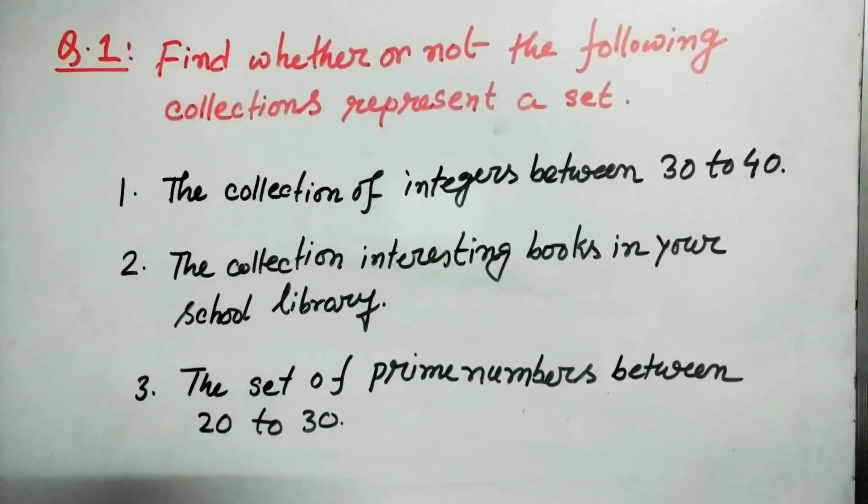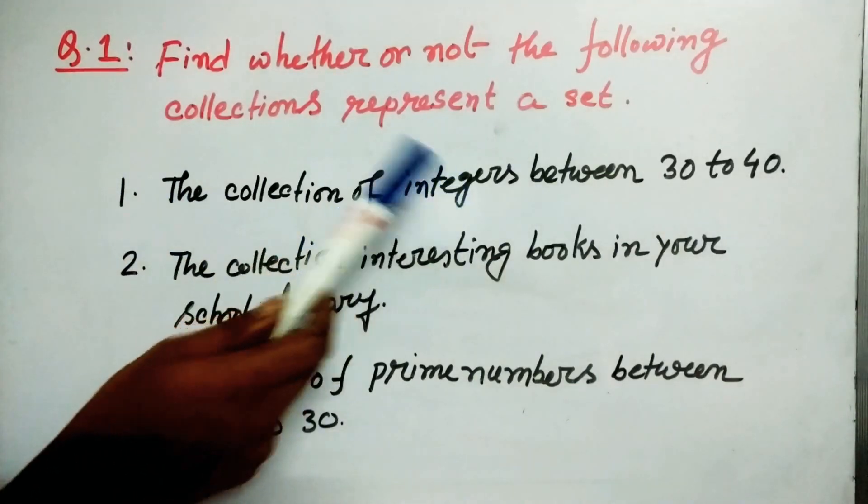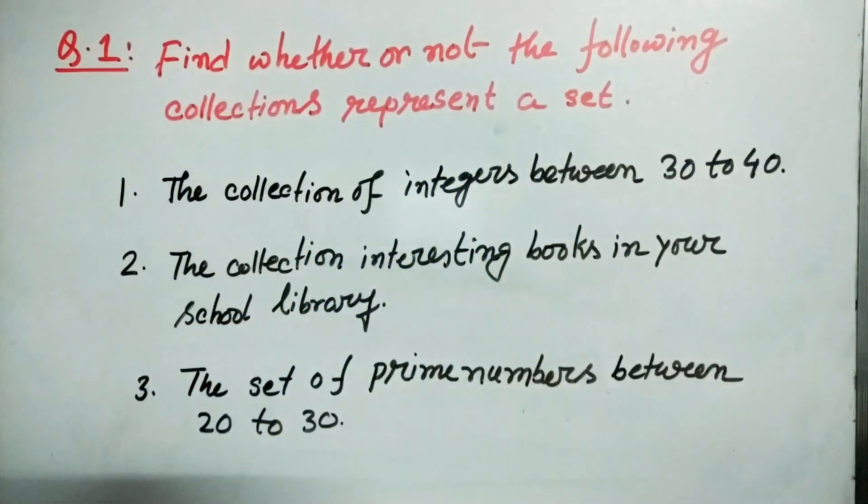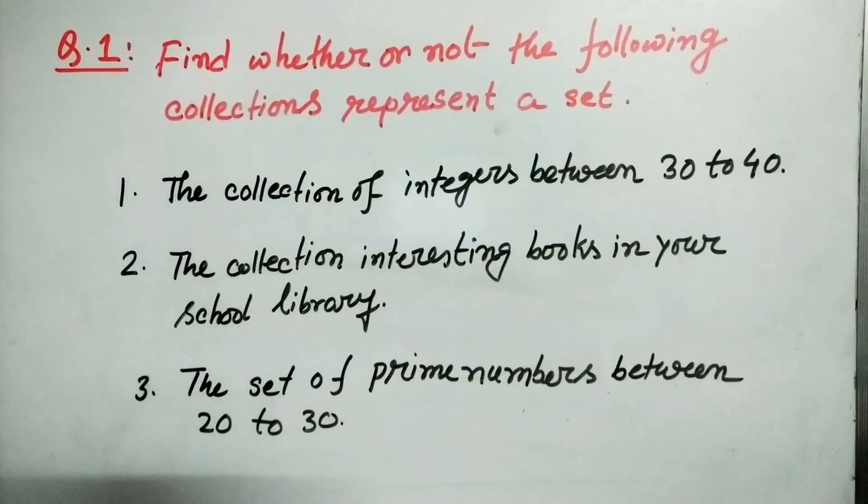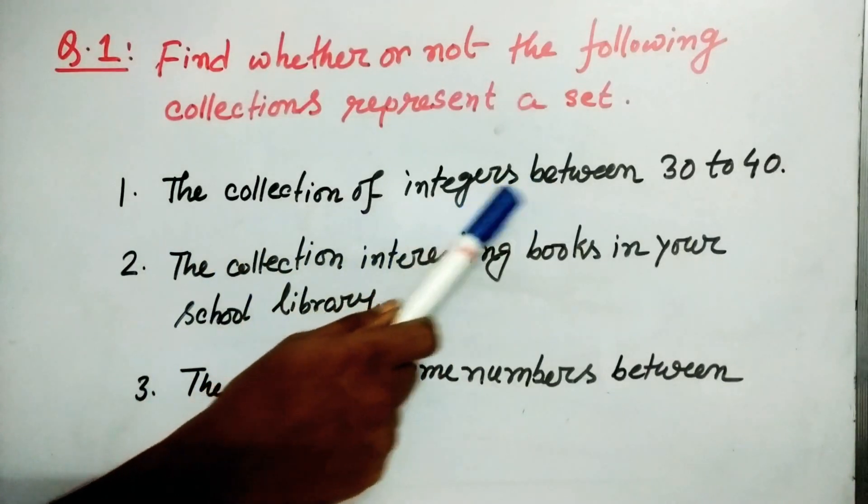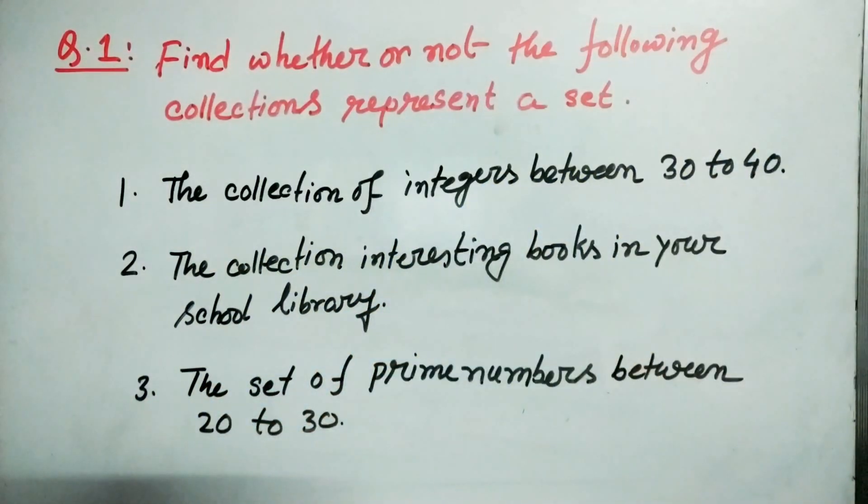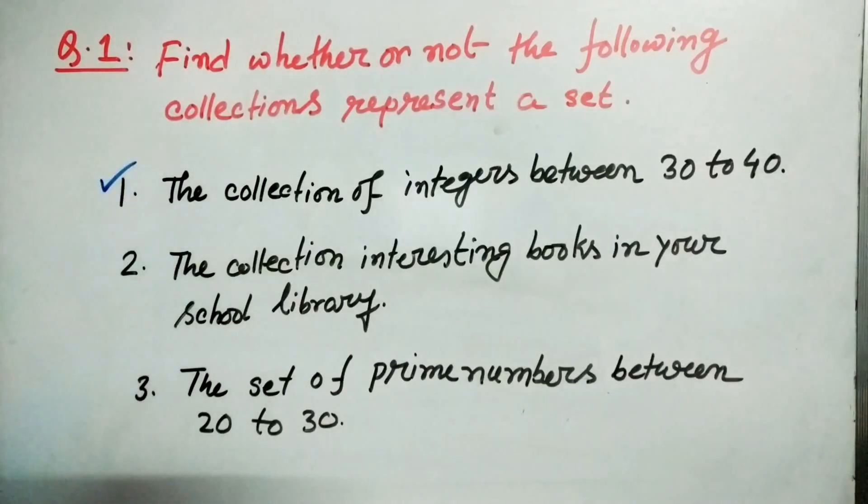So let us go for a question where we have to find whether or not the following collections represent a set. So the first one is the collection of integers between 30 to 40. So we have to check whether it is forming a set or not. Now if you think about the integers between 30 to 40, so obviously it is well defined. So definitely it will make a set.